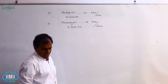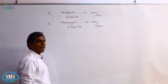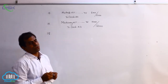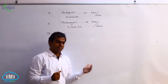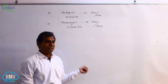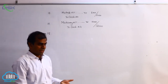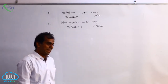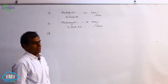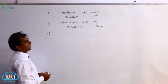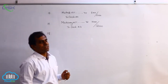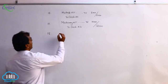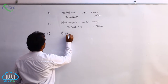The next transaction on the 18th is goods purchased from Anita. There is no mention of cash, and it is not clearly stated whether it is cash or credit. Since there is no payment mentioned, we assume it is a credit transaction — purchase of goods from Anita on credit.